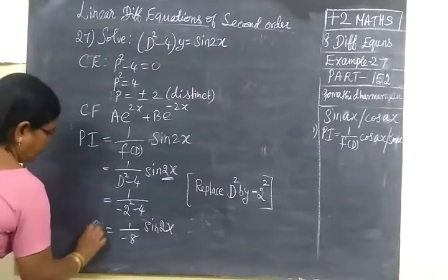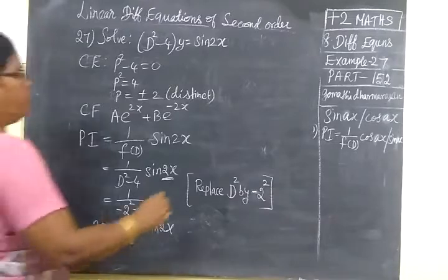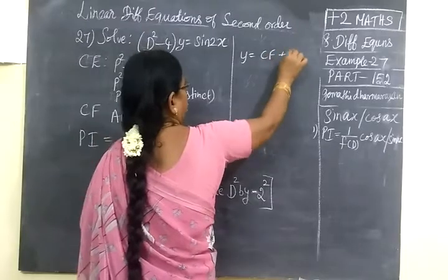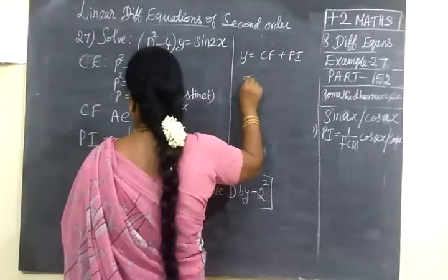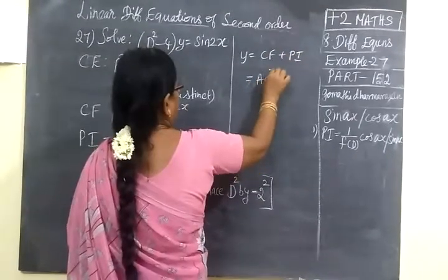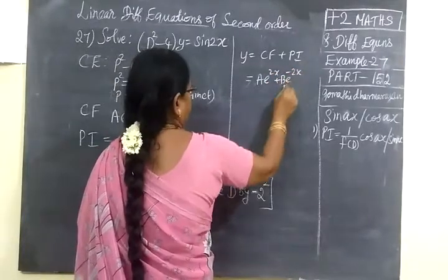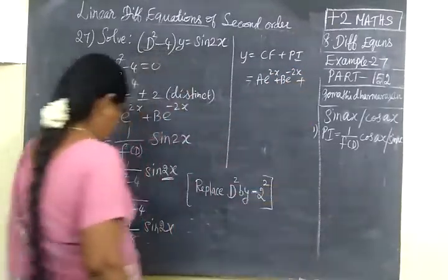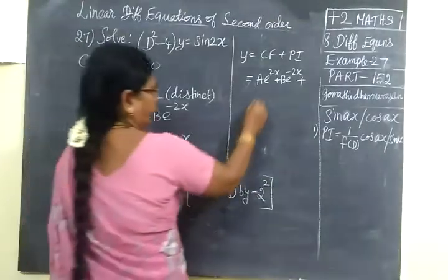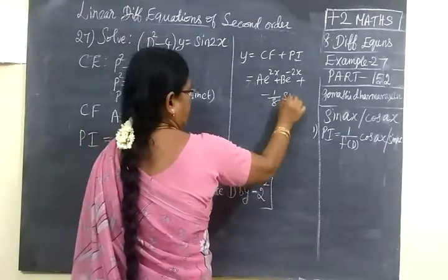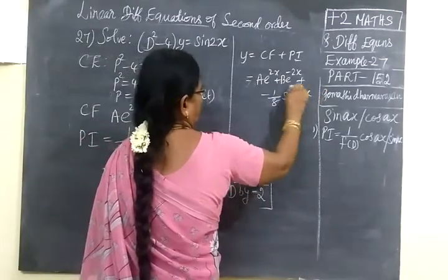So general solution y equal to CF plus PI. CF is A e power 2x plus B e power minus 2x plus 1 by 8, that means minus 1 by 8 sin 2x.